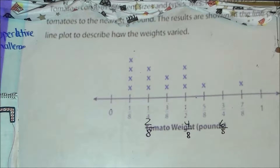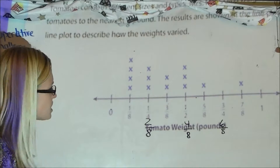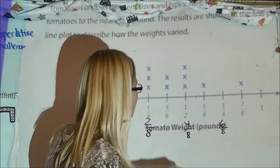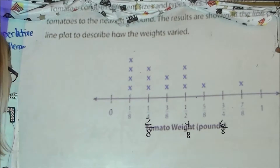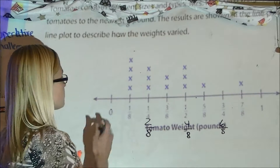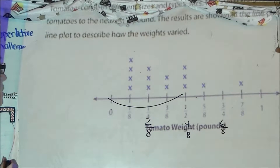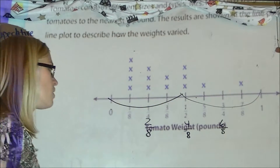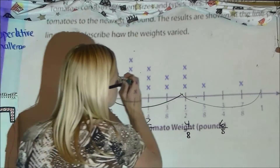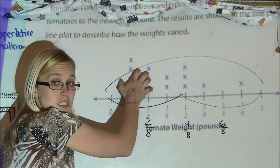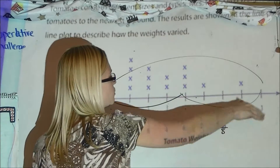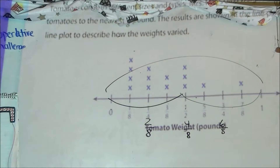Question 2 asks: which best describes how the weights are spread out? When looking at how they're spread out, I'm looking at where the highest concentration of data points is. There are only a few on one end and a decent amount in the middle, but the greatest concentration is on the lower side. Your answer choices are: clustered between 0 and 1/2, clustered between 1/2 and 1 pound, or spread out between 0 and 1. The concentration is really from 0 to 1/2 of a pound.